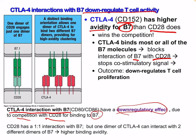CTLA-4 binds most or all B7 molecules, blocks interaction of B7 with CD28, stops co-stimulatory signaling, and the outcome is down-regulation of T cell proliferation. CD28 has a one-to-one interaction with B7, but one dimer of CTLA-4 can interact with two different B7 dimers and has higher binding avidity. CTLA-4 interaction with B7 has a down-regulatory effect due to winning the competition with CD28 for B7 binding.